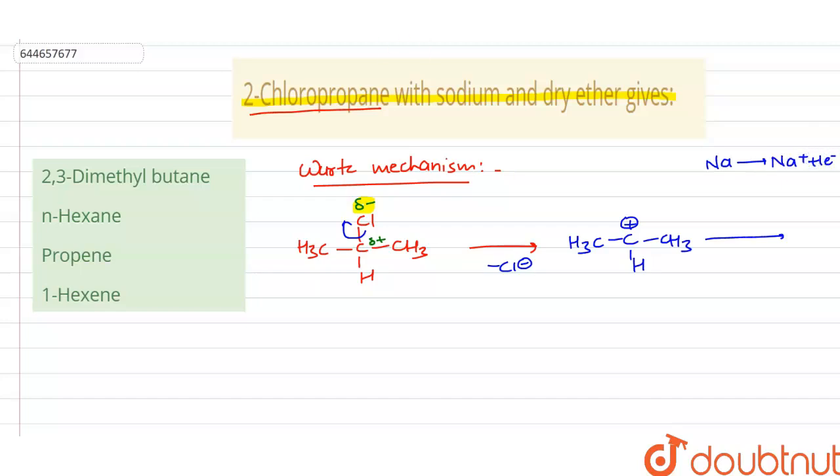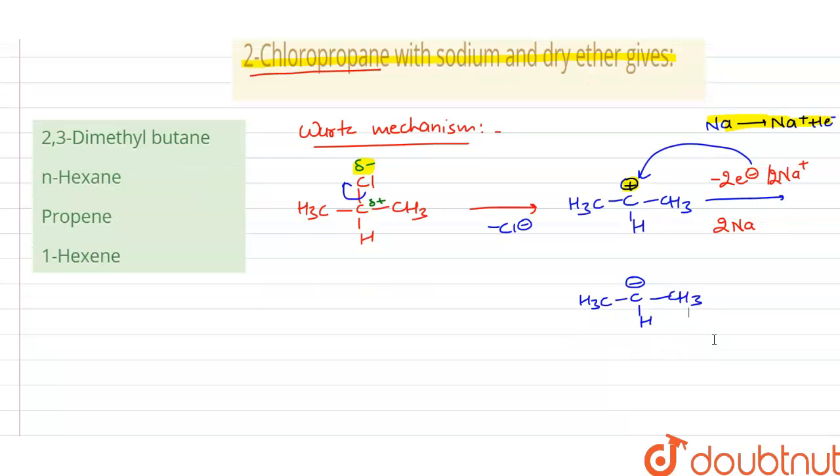This gives the formation of Na+ and one electron. In order to convert carbocation into negative charge, we need two Na so it can give two electrons. On giving two electrons, it forms 2 Na+. These two electrons add on, giving the formation of CH3-C−H-CH3.